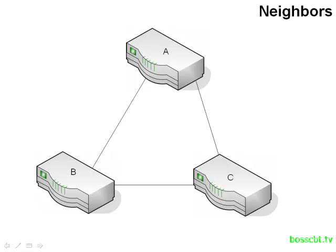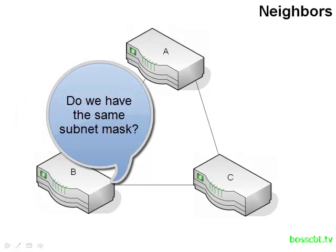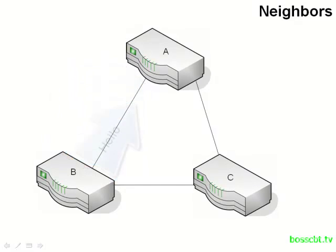Let's take a look at the hello process in action — it's relatively simple. It starts with a router sending out a hello packet to the multicast address. Let's say router A sends it out on the link between it and router B. Router B is going to receive that packet and examine all of the information in the hello packet. If all of that information checks out — everything that should match matches and there are no problems — router B will send a hello packet back to router A.